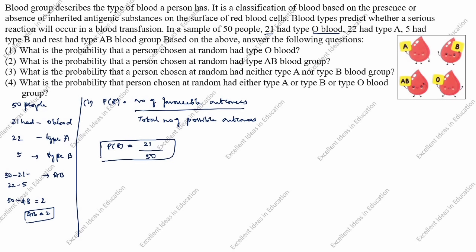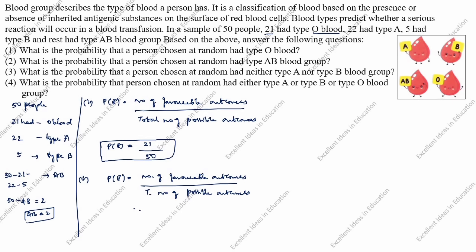So P of E equals 21 by 50. This is the answer for the first question. Second question: what is the probability that a person chosen at random had type AB blood group? AB blood group is 2. P of E is equal to number of favorable outcomes divided by total number of possible outcomes, equal to 2 by 50, cancel to get 1 by 25. P of E is equal to 1 by 25.